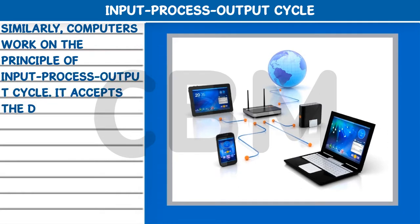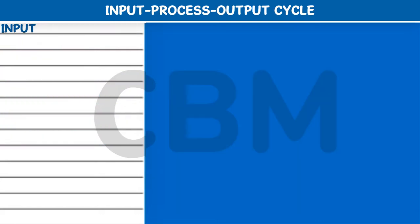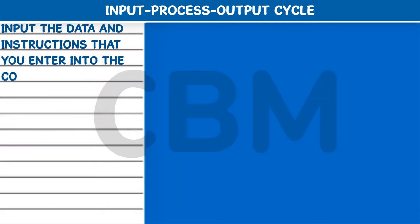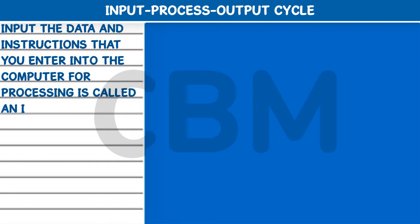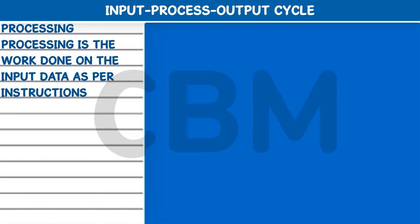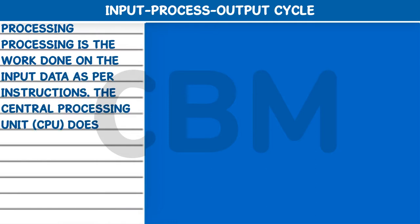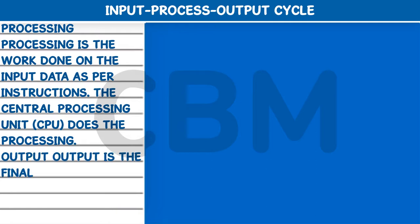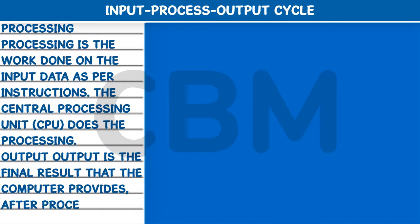The computer accepts the data, processes it, and provides the desired output. Input: The data and instructions that you enter into the computer for processing is called input. Processing: The work done on the input data as per instructions is called processing. The central processing unit does the processing. Output: Output is the final result that the computer provides after processing the data.